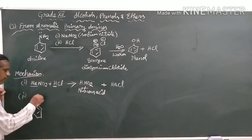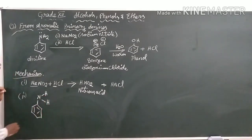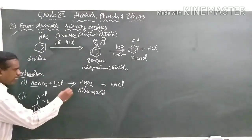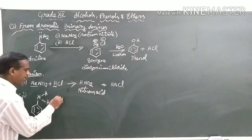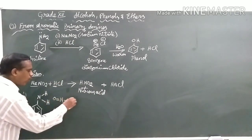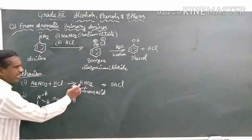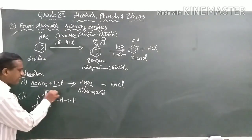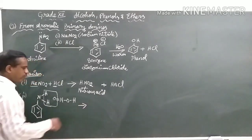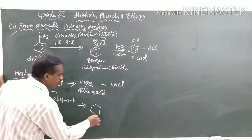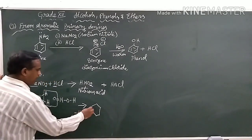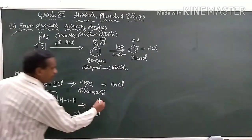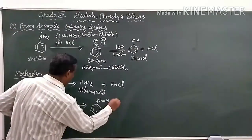This nitrous acid reacts with aniline. In aniline, the nitrogen has two hydrogens. The nitrous acid, arranged as HO-N=O, reacts with aniline. The hydrogens on nitrogen are removed by the oxygen and they are removed in the form of water, forming a nitrosin intermediate with a double bond between both nitrogens and an OH group.